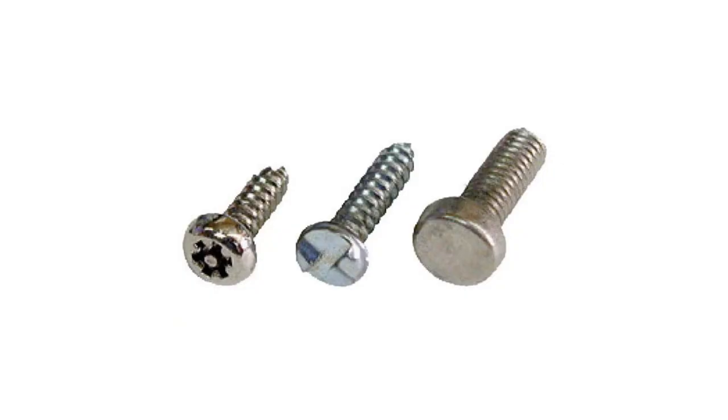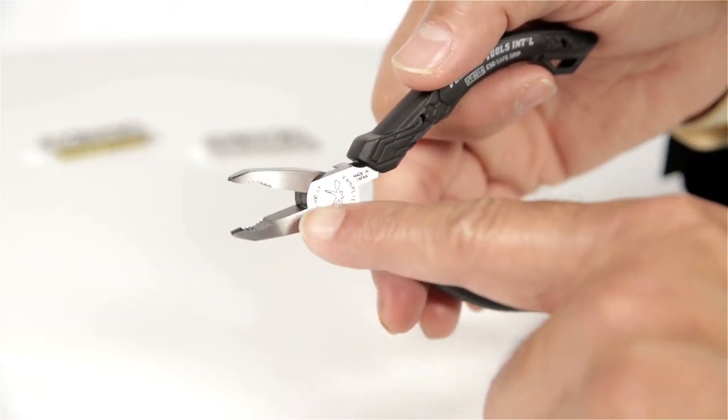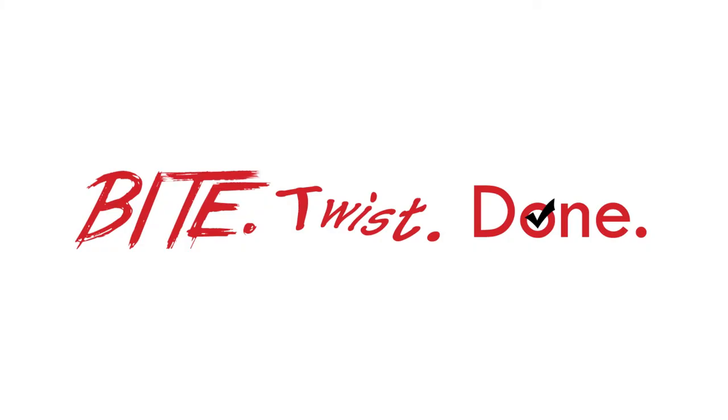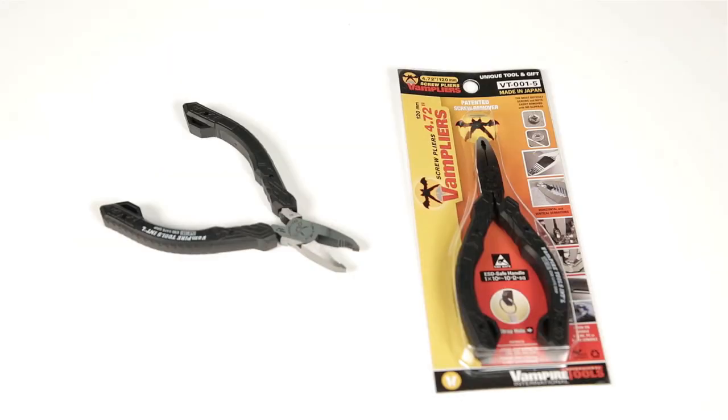These will also remove tamper-proof, one-sided, security and specialty screws such as Torx screws. Manufactured in Japan, Vampire's are made of high-quality carbon steel. All you have to do is bite, twist, done. Pick yours up today.